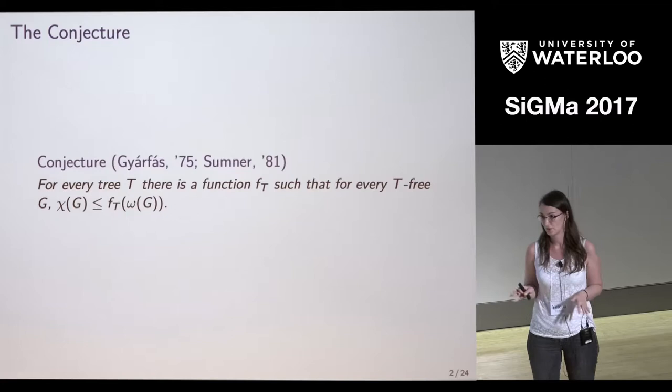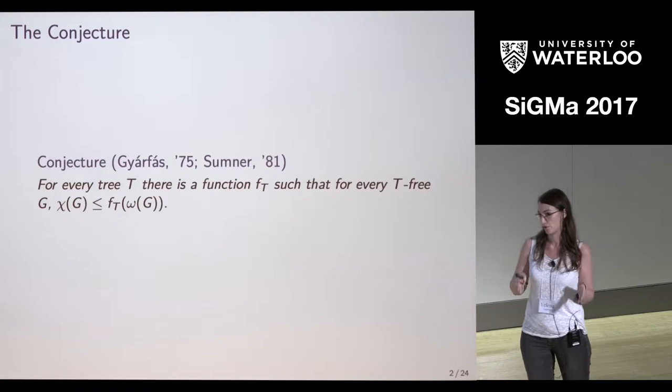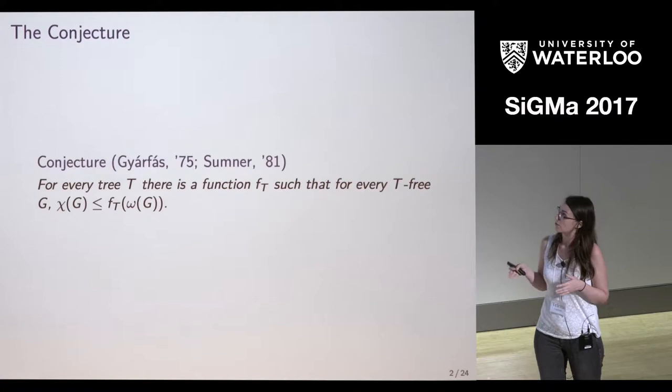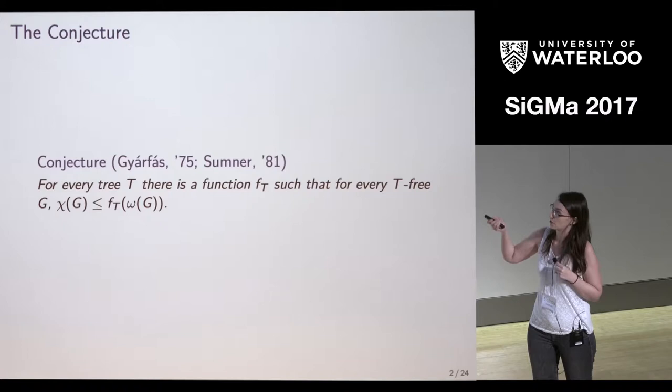I will remind you the conjecture — it was already mentioned in other talks. The conjecture says that essentially if we fix some tree T and look at the family of all graphs that don't contain this tree T as an induced subgraph. Every time I say T-free or H-free, I mean in the induced sense. The family of all T-free graphs is chi-bounded, which means there is some function such that the chromatic number of G, which is T-free, is bounded by a function of the clique number.